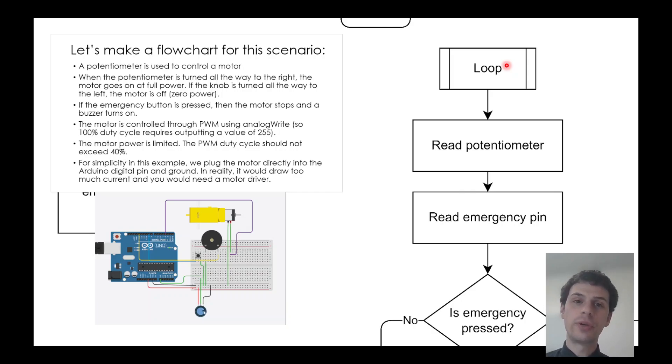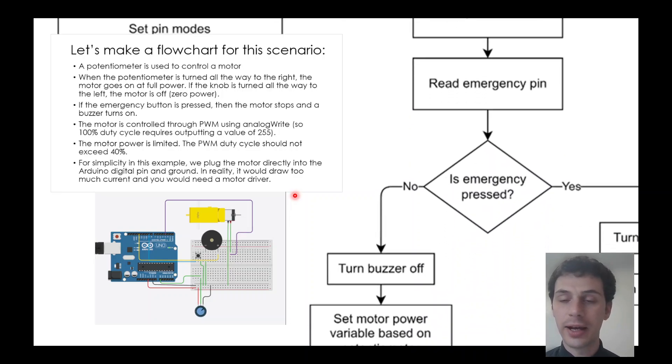The loop function runs over and over again. I will first read the value of the potentiometer to know how far that's turned. Then I will read this button, the pin that's corresponding to that emergency button. And then, aha, important!